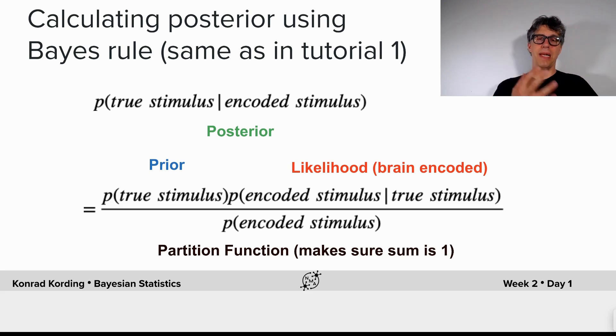We have a completely different prior, and yet we can use exactly the same mechanisms. The posterior again is the prior, which now is different, times the likelihood and normalized so that it adds up to one.